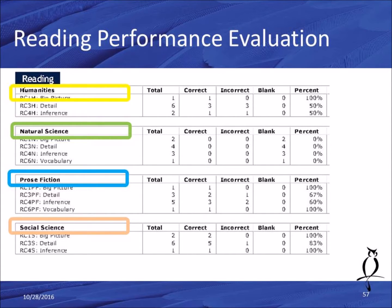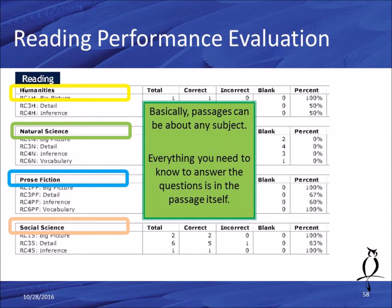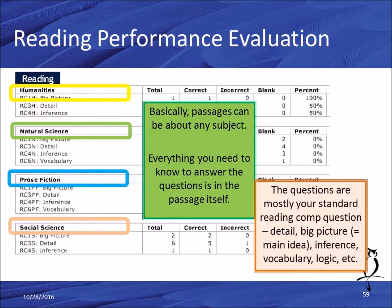In reading, there are four major passage types that always show up on every exam: humanities, natural science, prose fiction, and social science. The passages can be about any subject, but everything you need to answer the questions correctly is in the passage itself — you're not expected to bring outside knowledge. ACT reading comp questions are standard: big picture, detail, main idea, inference, vocabulary, logic, compare and contrast, and cause and effect.